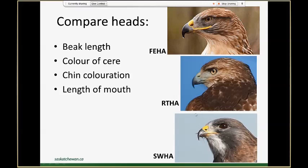Chin coloration is different across these three birds as well. Ferruginous hawks often have that white chin that turns into a white chest. Red-tails have that brown hood that goes over their head. And I think what's most distinctive is the Swainson's hawk, because they have that white patch above their cere and that distinctive white chin patch before it turns into that dark bib.